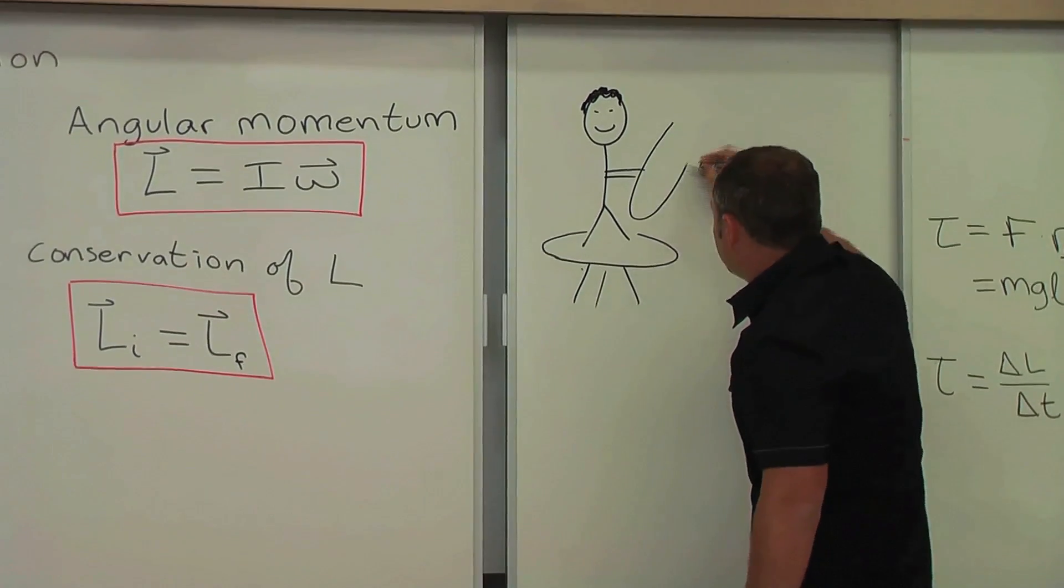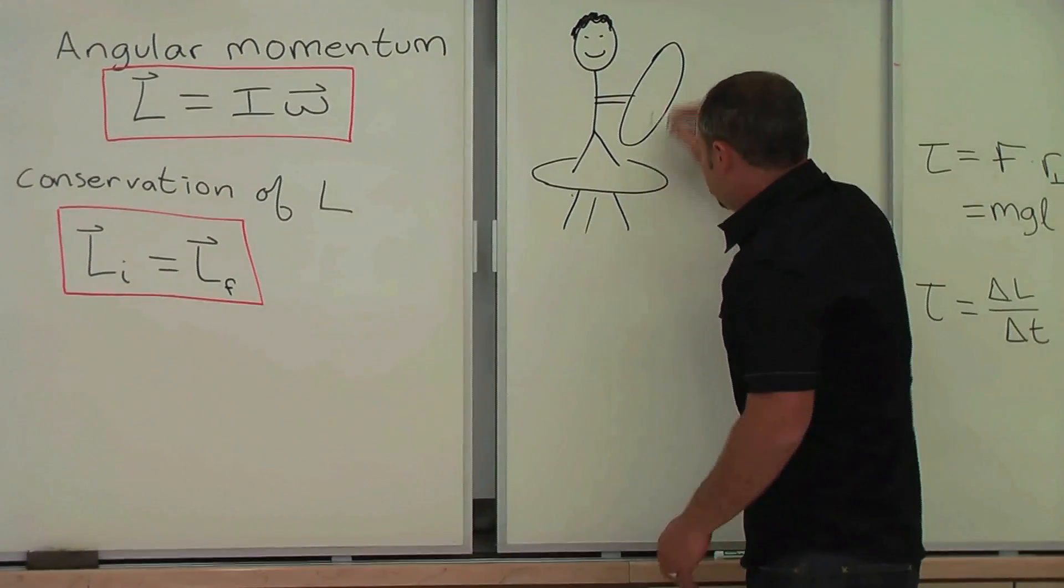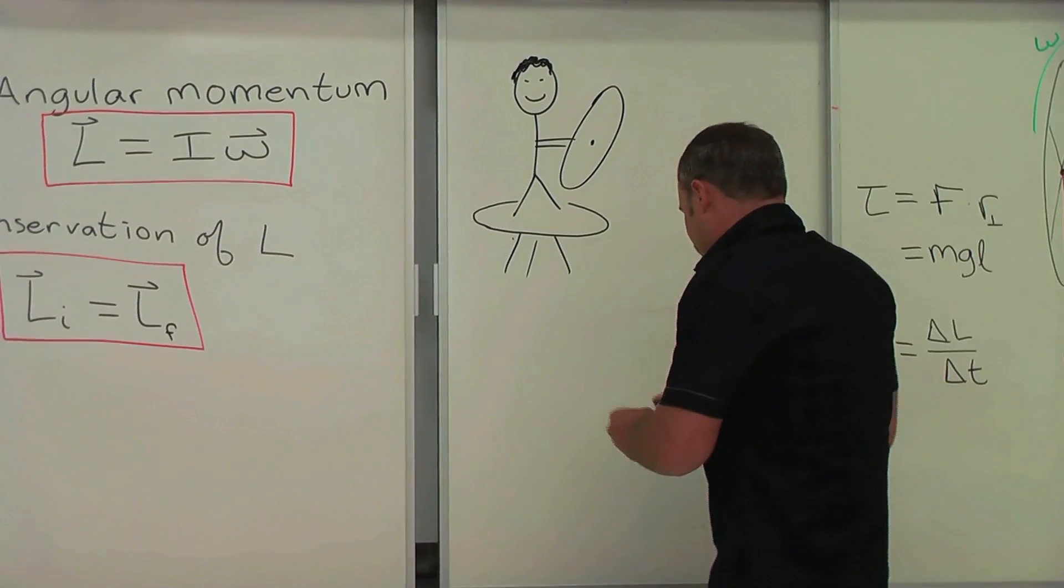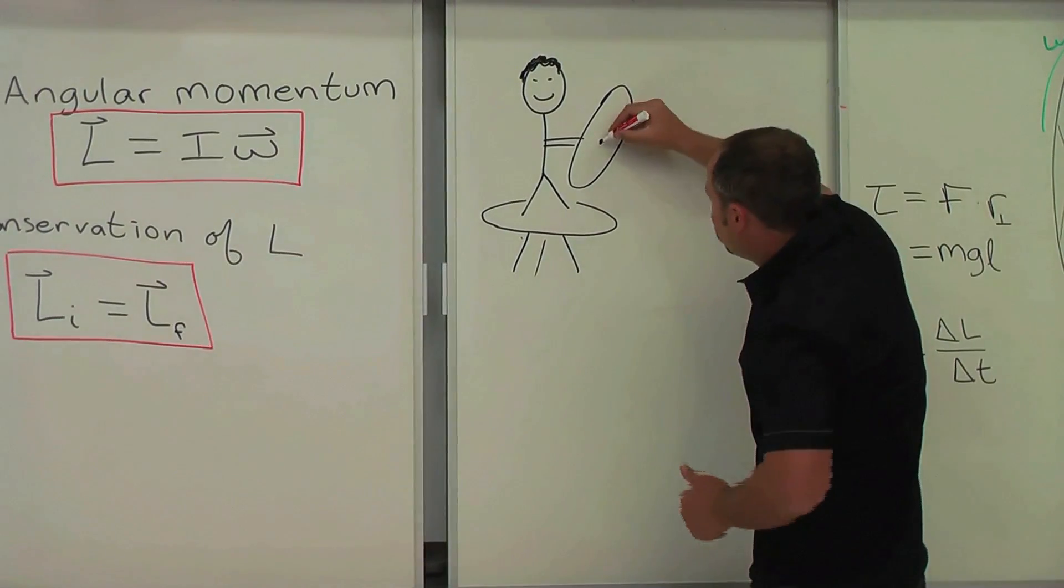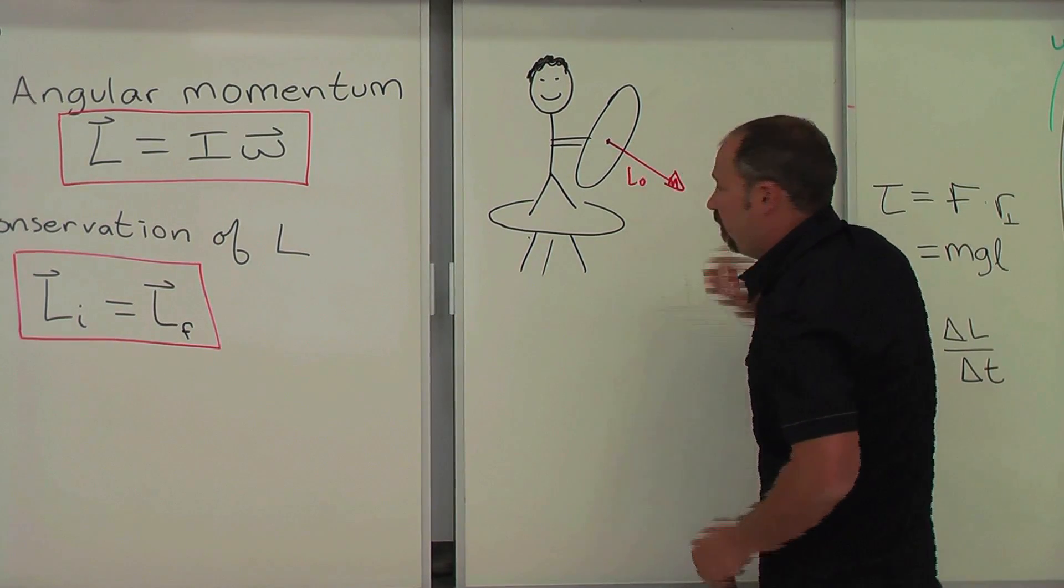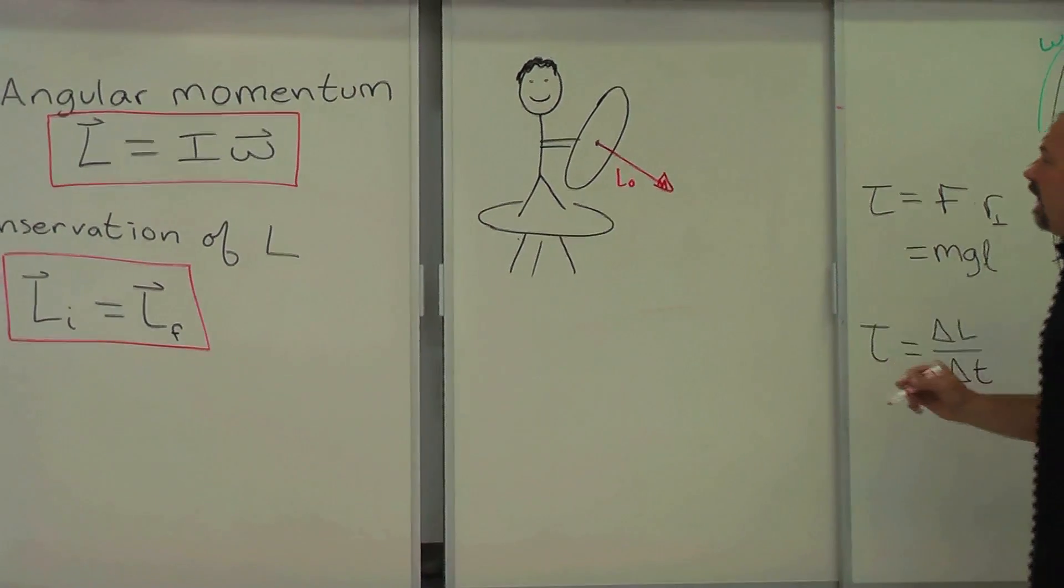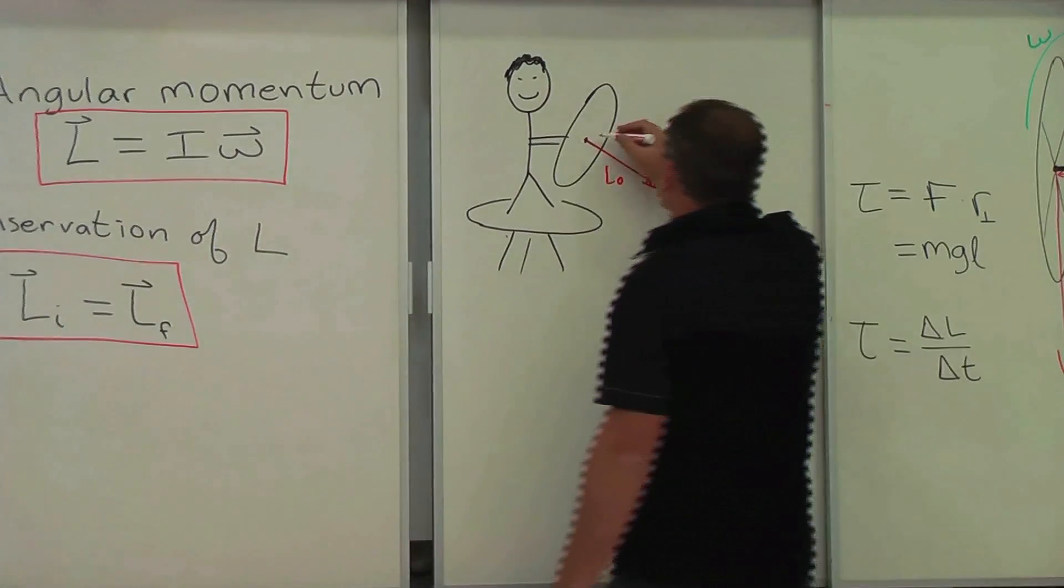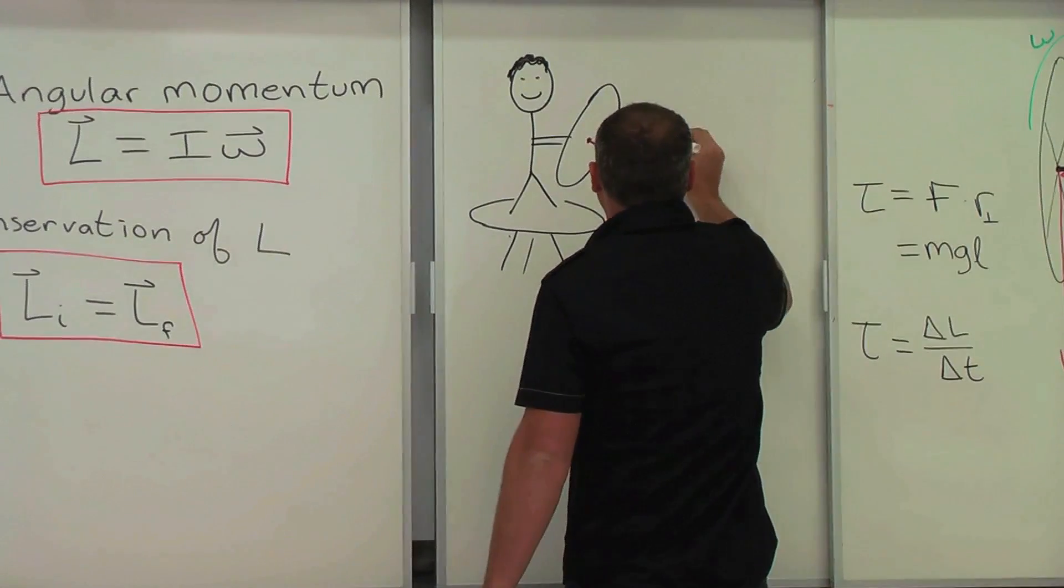And we now have the spinning wheel going downwards. So the angular momentum vector is now pointing like this. So this is the L naught, and this was the old angular momentum.